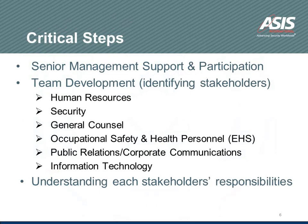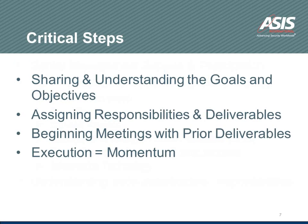So then we'll talk about critical steps. What do you need as far as critical steps to make these implementations work? Well, certainly you need senior management support and participation — and we'll talk a little bit more about participation. Identifying your stakeholders: as Dan mentioned in that process map, you've got to know who your stakeholders are. These are some of the ones that we chose to use with our implementation. And then finally, understanding each stakeholder's responsibilities. We need to know what the stakeholders' responsibilities were with HR and vice versa. That worked well to ensure everyone understood it.